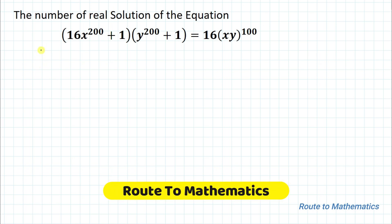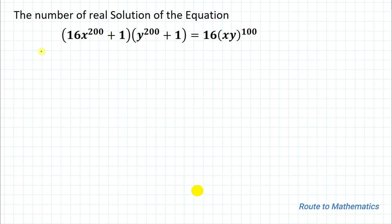Hello everyone, welcome to Root 2 Mathematics. In this video we're going to solve an interesting algebraic problem. The given question is: find the number of real solutions of the equation (16x^200 + 1)(y^200 + 1) = (16xy)^100.